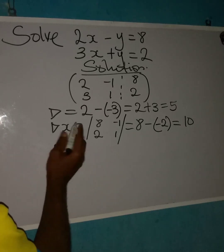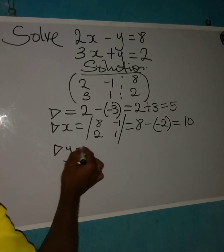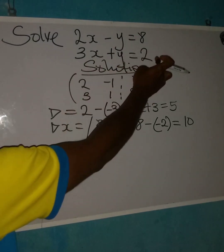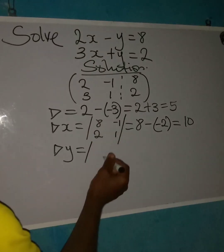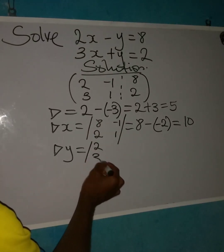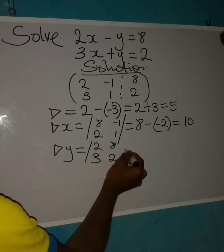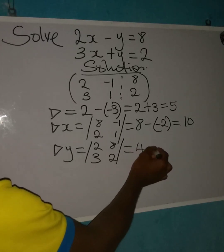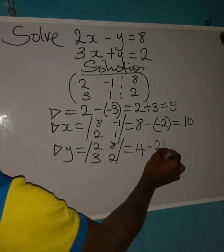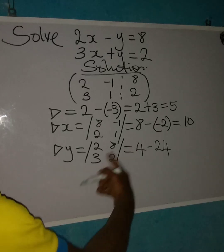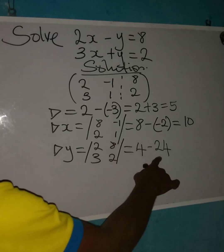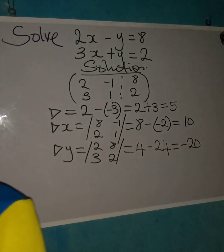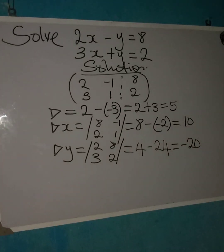Now we find determinant DY. For DY, the Y column is excluded, so we consider 2, 3 and 8, 2. The determinant is 2 times 2, which is 4, minus 3 times 8, which is 24. So DY equals 4 minus 24, which gives us minus 20.